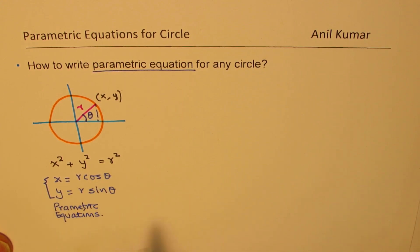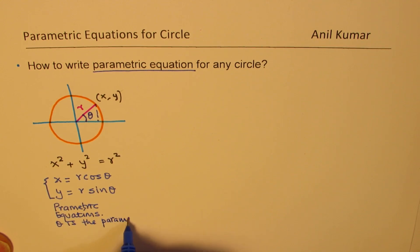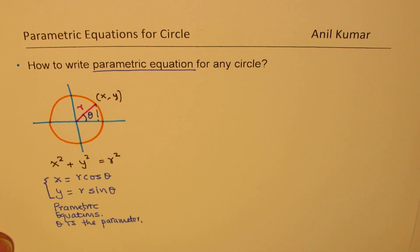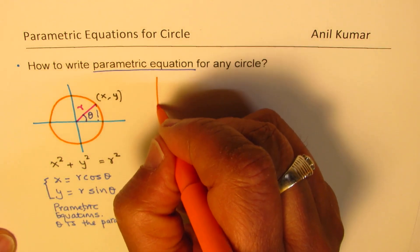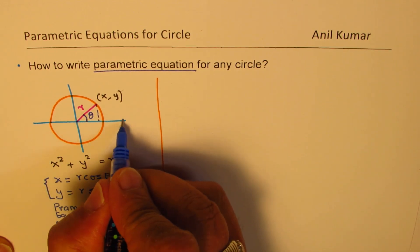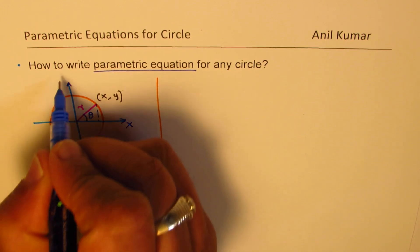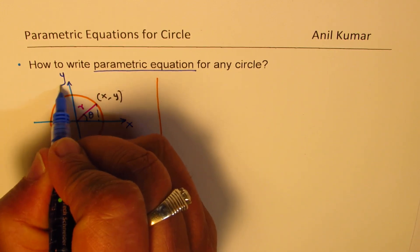The parameter is theta. Where theta is the parameter, we get our equations in terms of theta. We always get a set of equations when we write parametric form, and that is how we convert a Cartesian equation into a parametric equation.